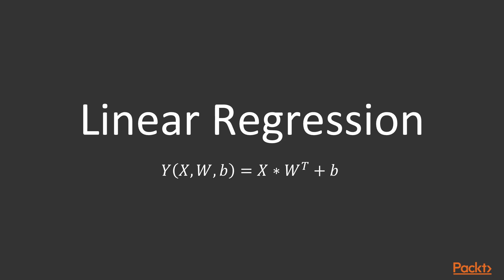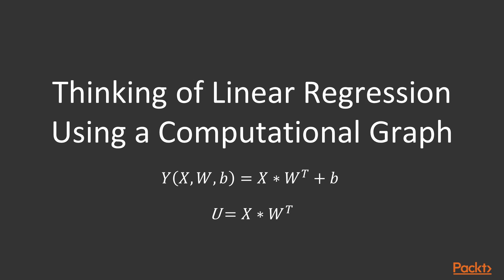Let's look at a simple computational graph example, a linear regression. We are given variable x and output y. The parameters here are w and b. The mathematics form is y equals x times w transpose plus b. The way of thinking of linear regressions using a computational graph is to break down the computational operations. We first break the first part, x times transpose w, to get u equals x times w transpose. We have another part which is y equals u plus b.